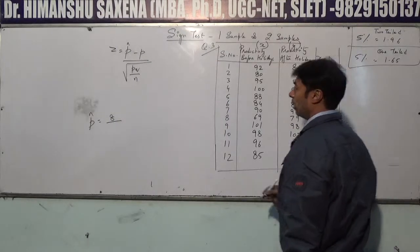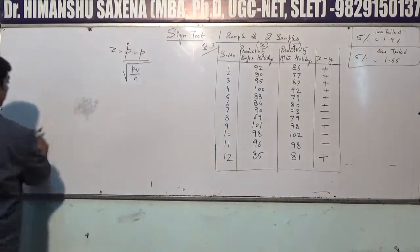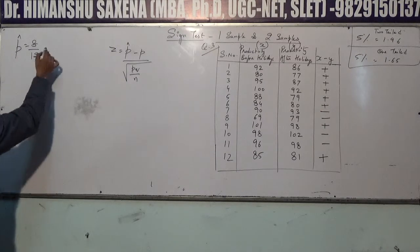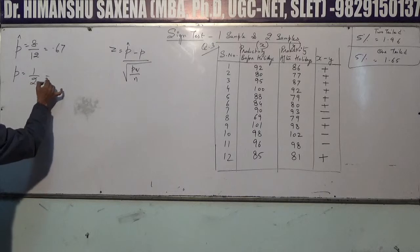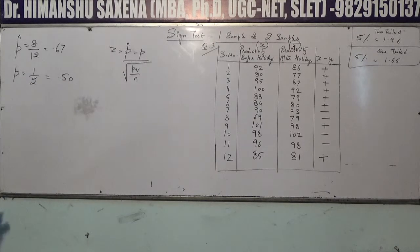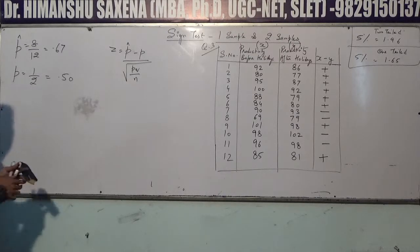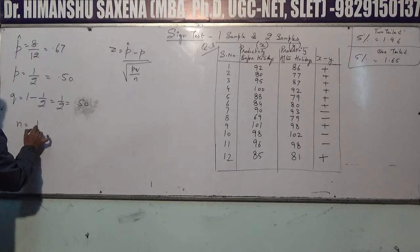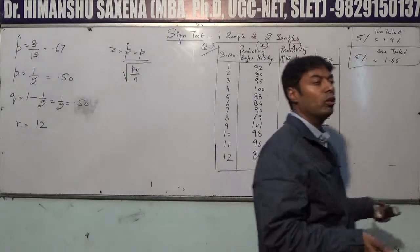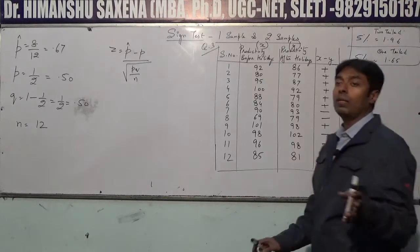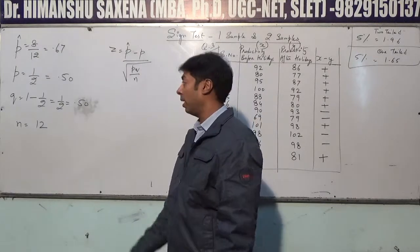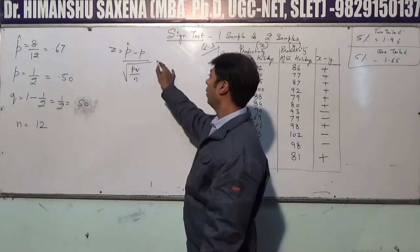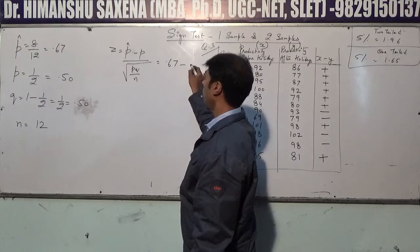P-cap = 8 / 12 = 2/3 = 0.67. P = 1/2 = 0.50 (probability of positive sign, always 0.50). Q = 1 − 1/2 = 0.50. Number of valid signs N = 12, as there are no zeros in this dataset.